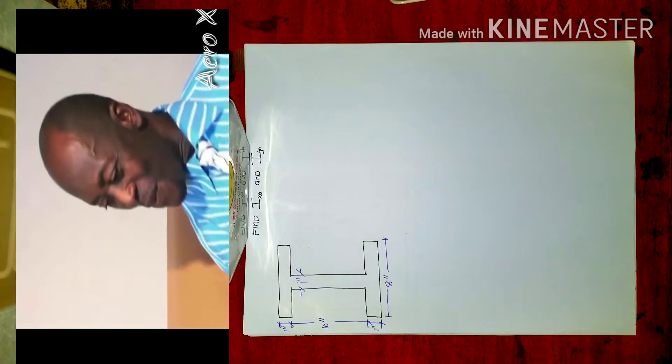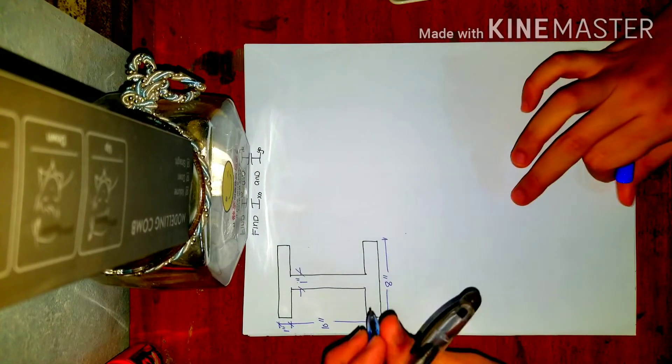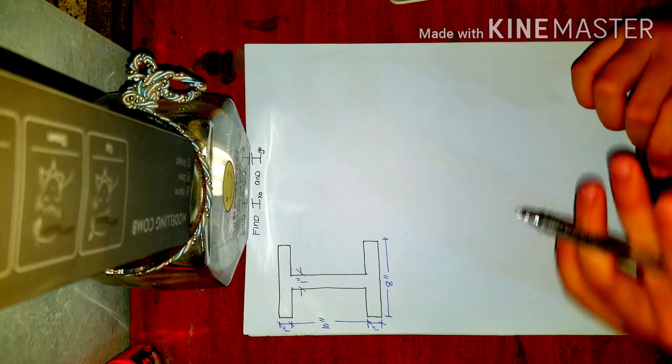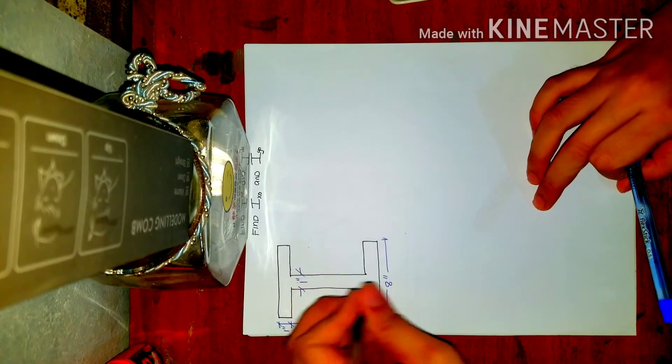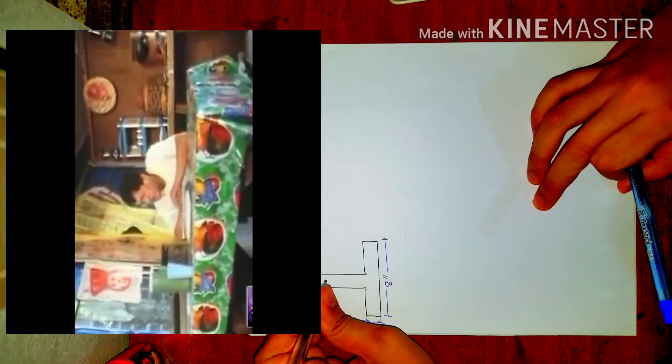So in short, I can conclude that the centroid or center of gravity of our composite section is located right here in the middle.